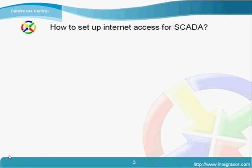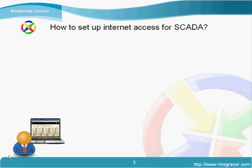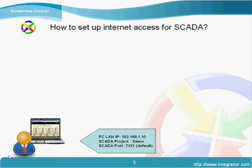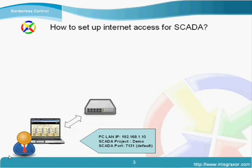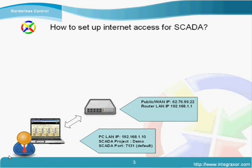Here is the overview picture showing how it works. You have an Integraxer Scada server running in a local area network with a LAN IP assigned by your router DHCP. You have a project called demo configured in your Integraxer server with a default port setting of 7131. Then your router, which is connected to the internet, will be assigned by your internet service provider with a fixed or dynamic public IP — the one that is long and hard to memorize.